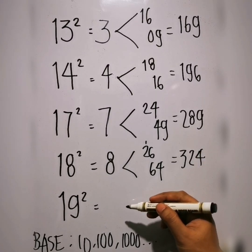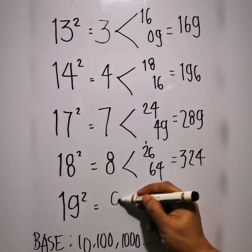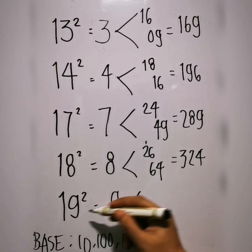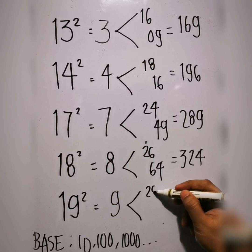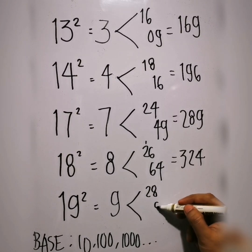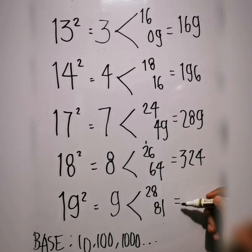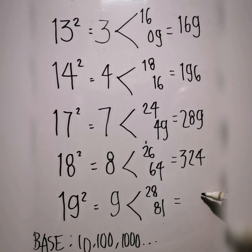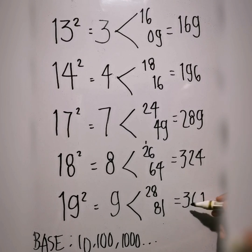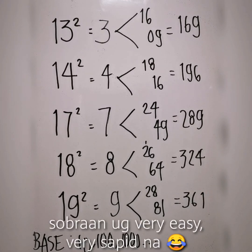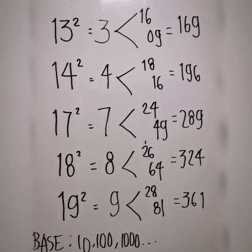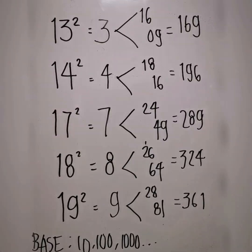Last example, 19 squared. 19 minus 10 is 9. 19 plus 9 is 28. 9 squared is 81. The units digit is 1, then 8 plus 8 is 16 — carry 1. So we have 361. Very easy, right? Thank you for watching, I hope you learned something new. Thanks!